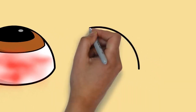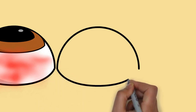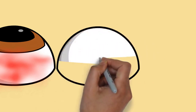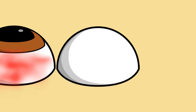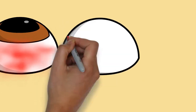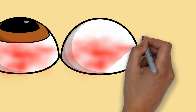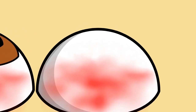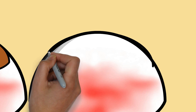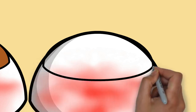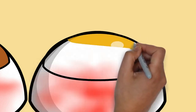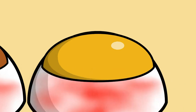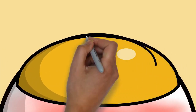Its diameter is typically about 24 mm (0.94 in). An area termed the limbus connects the cornea and sclera. The iris is the pigmented circular structure concentrically surrounding the center of the eye, the pupil, which appears to be black. The size of the pupil, which controls the amount of light entering the eye, is adjusted by the iris dilator and sphincter muscles.